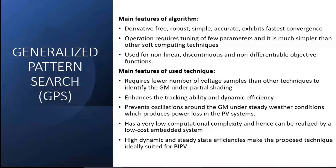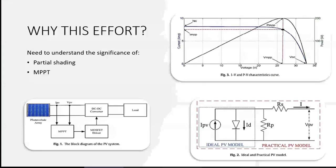Because it requires fewer samples than other techniques, the global maxima is identified much more quickly compared to other techniques in partial shading. The other techniques I mentioned do not perform as well under partial shading. GPS enhances tracking ability and dynamic efficiency, and it reaches the global maxima much faster.